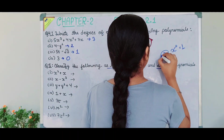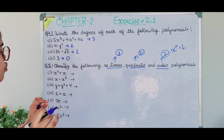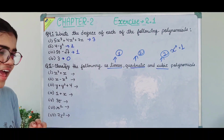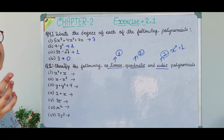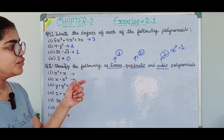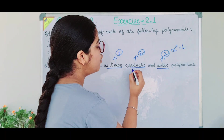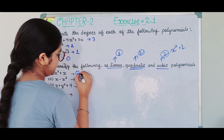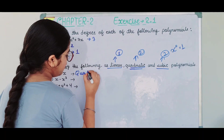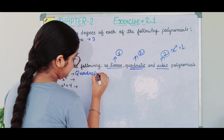The first part is x² + x. The degree is 2. We say degree 2 is quadratic. So this is a quadratic polynomial.